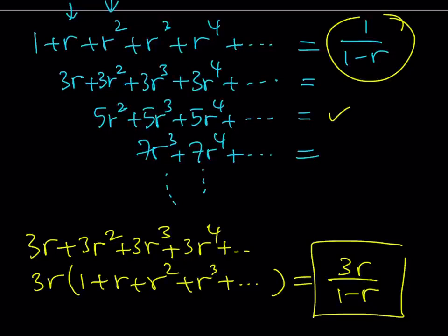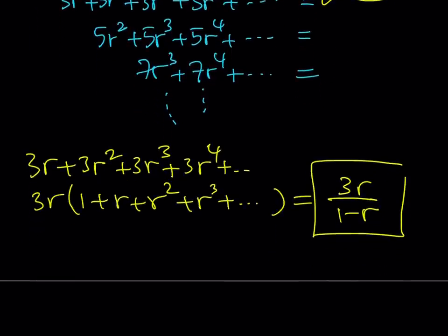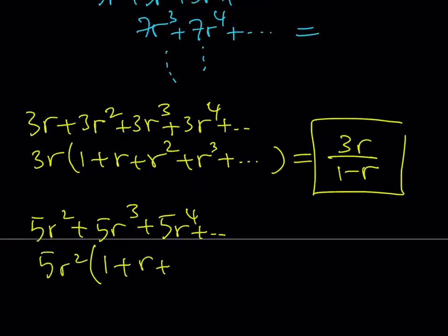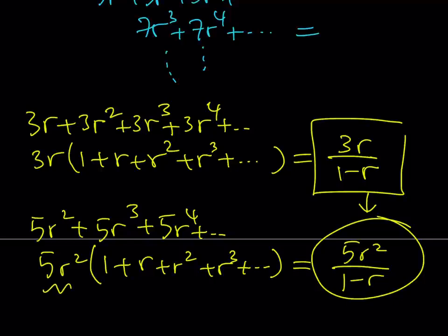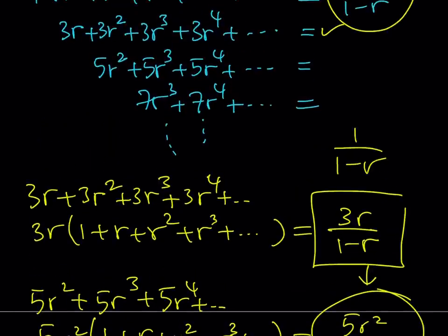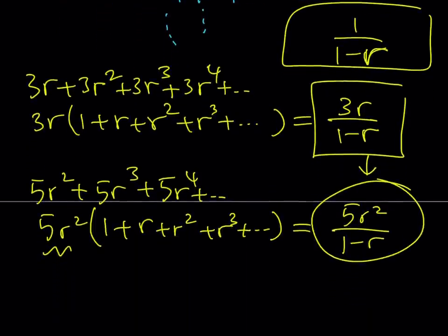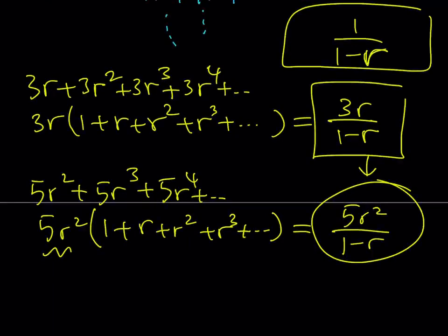Let's go ahead and find the third one. For the third one I have something similar, but the difference is I have 5r squared, 5r cubed, 5r to the fourth power, and so forth. This sum gives me 5r squared multiplied by the quantity 1 plus r plus r squared plus r cubed, and so on. That equals 5r squared over 1 minus r, for the same reason — we know the sum inside is 1 over 1 minus r. This is my third sum, and the first sum is 1 over 1 minus r.